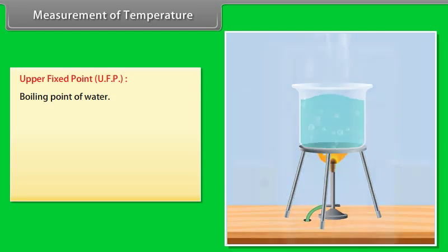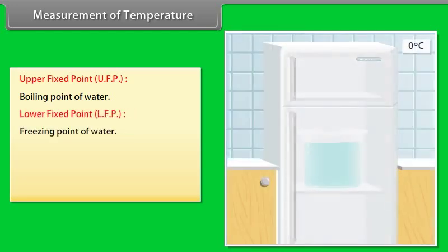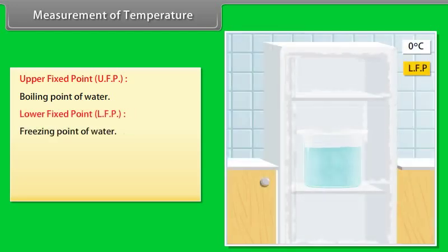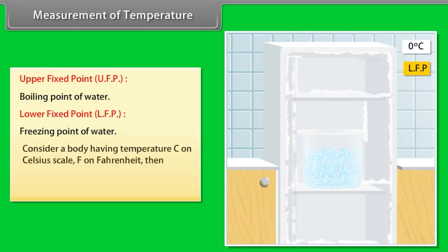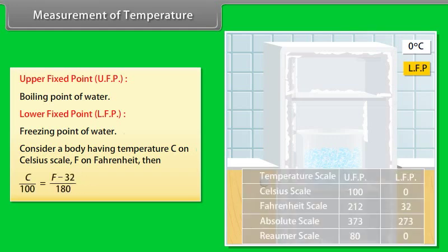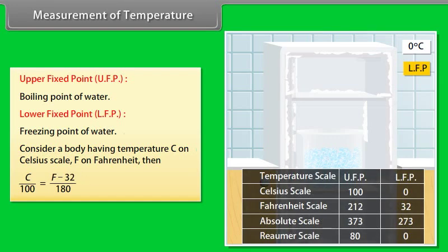The freezing point of water is known as the lower fixed point. Consider a body having temperature C on the Celsius scale and F on the Fahrenheit scale. Then C/100 is equal to (F − 32)/180.